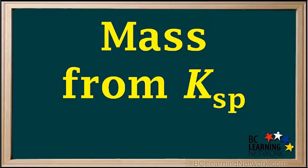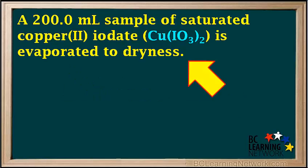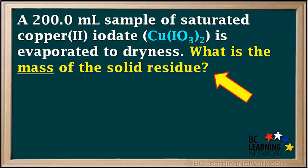In this video, we'll do an example in which we'll calculate the mass of a solute in a saturated solution, given its Ksp. A 200 milliliter sample of saturated copper-2-iodate is evaporated to dryness. We're asked to find the mass of the solid residue. The residue consists of the solute, Cu(IO₃)₂, that was dissolved in a saturated solution.